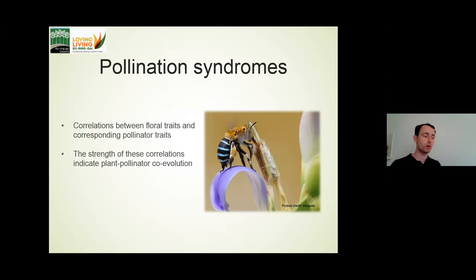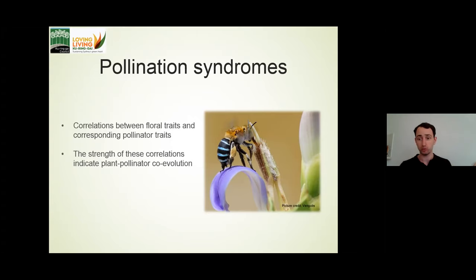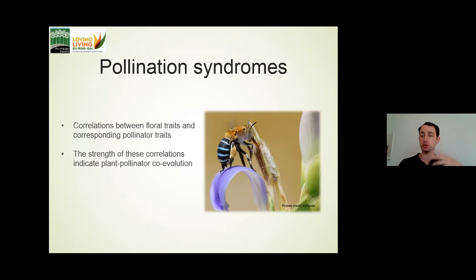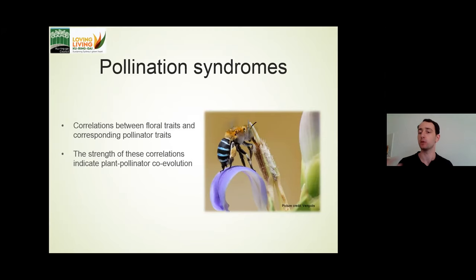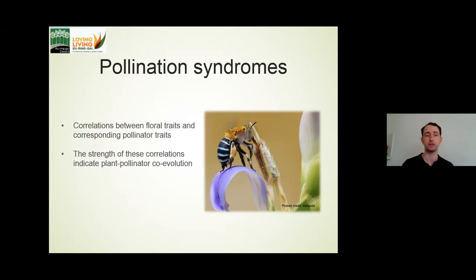By co-evolution, I'm referring to the process by which two or more species evolve in tandem by exerting selective pressures on each other. For example, if a flower's corolla becomes deeper, the pollinator might become longer-tongued. That's a simple way to look at it, but it's a great supporter of the idea of co-evolution.